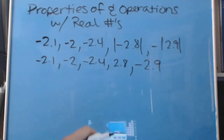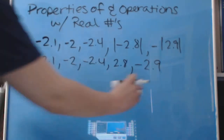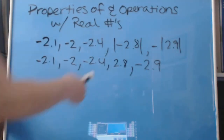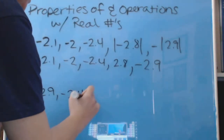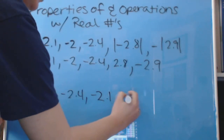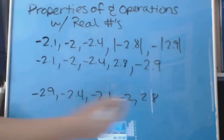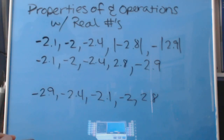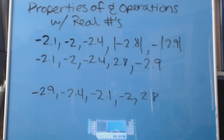Now I can put these in order from smallest to greatest: negative 2.9 is the smallest, then negative 2.4, then negative 2.1, then negative 2, and finally 2.8 is our largest number. Hopefully this helped you guys out. Happy math-ing everybody — I'm the Math Panda, see you next time.